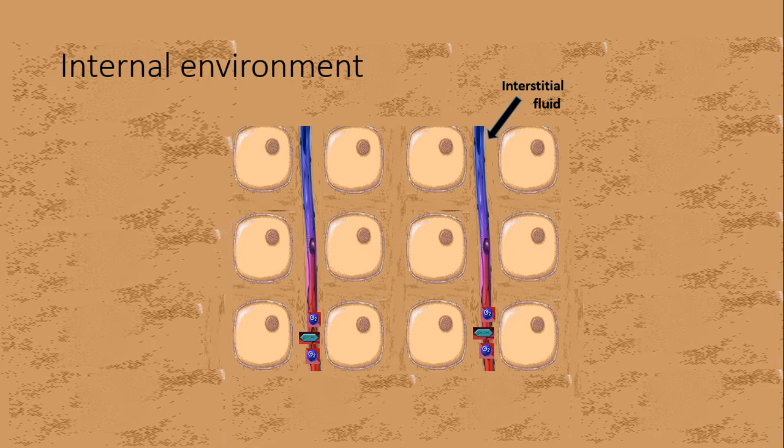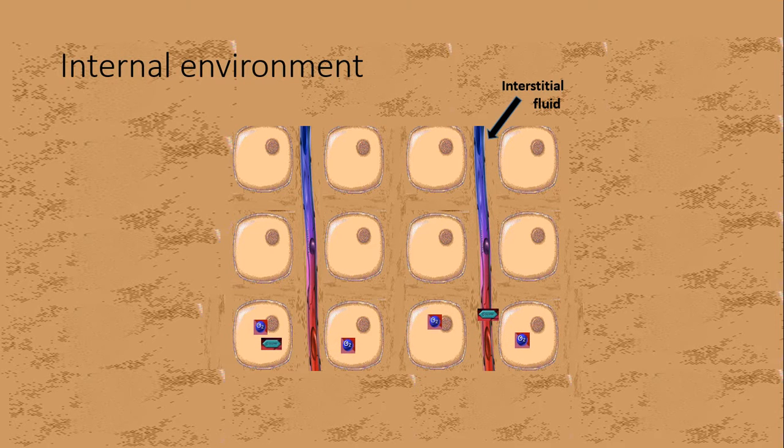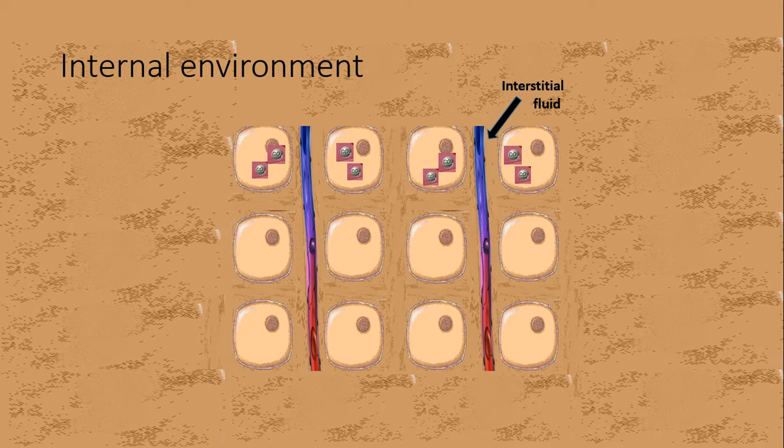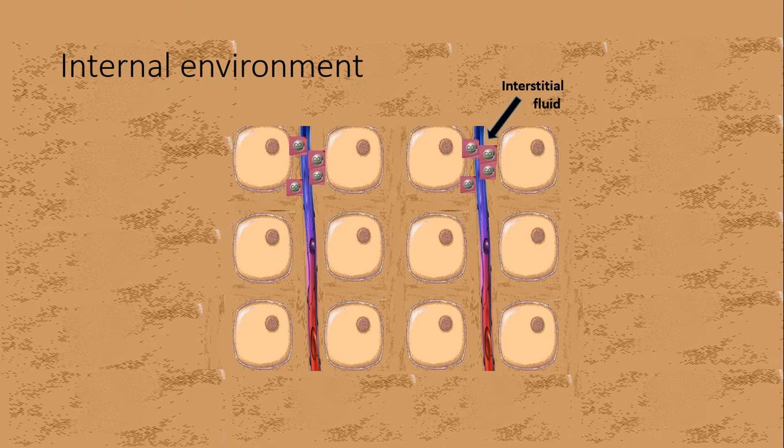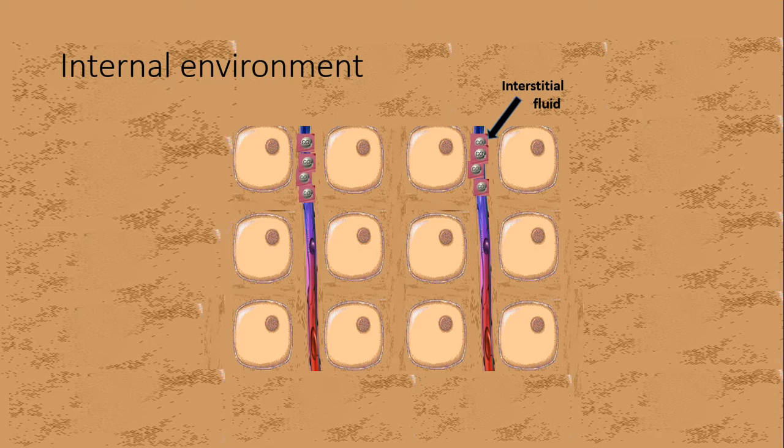A fluid known as interstitial fluid bathes the cells. Oxygen and nutrition from the internal transport system reach the cells through the interstitial fluid. Waste products move through the interstitial fluid to the transport system, which excretes them out of the body.